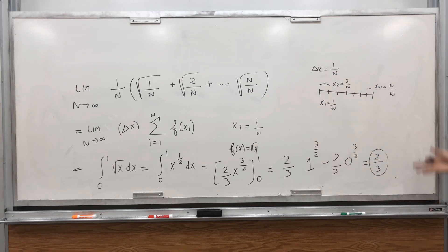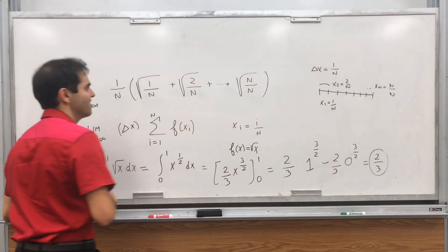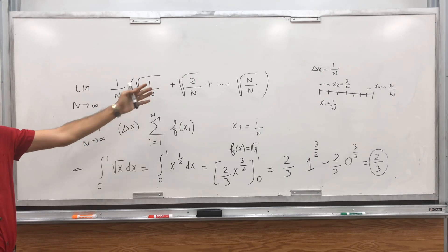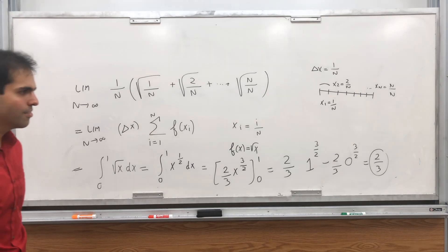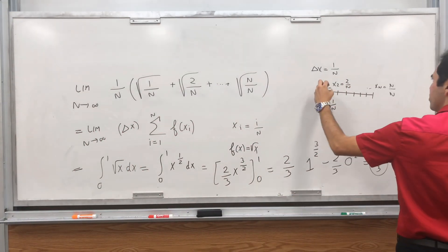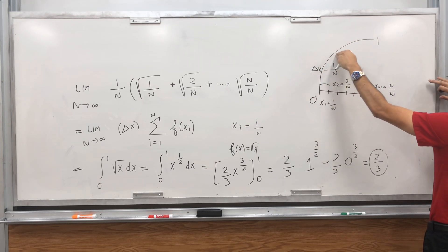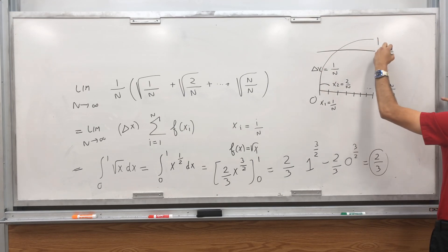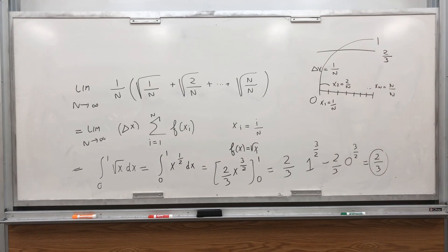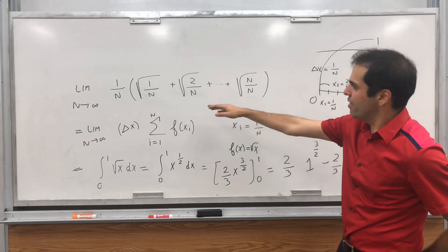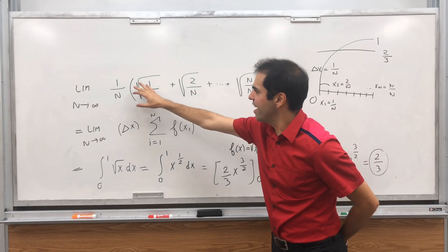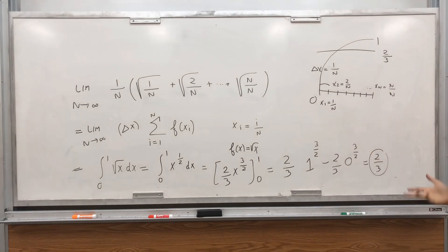So indeed, if you take this limit as n goes to infinity, you get 2/3, which is very curious. Who would have thought that summing up the square root values from 0 to 1 gives 2/3? The square root function bends such that the average value over [0,1] is 2/3 — it bends more than it curves down. And the sum itself, as n goes to infinity, is basically 2/3 times infinity, which is infinity — that's why we had to average it out.